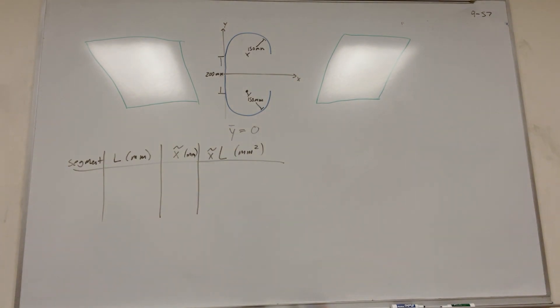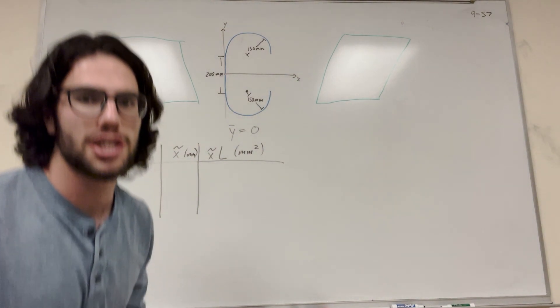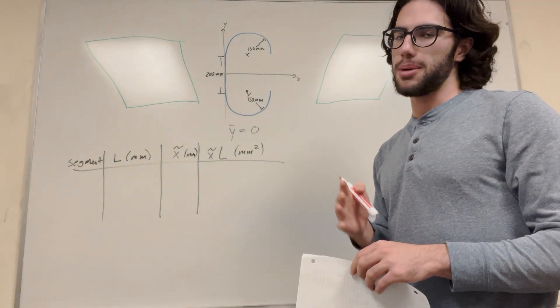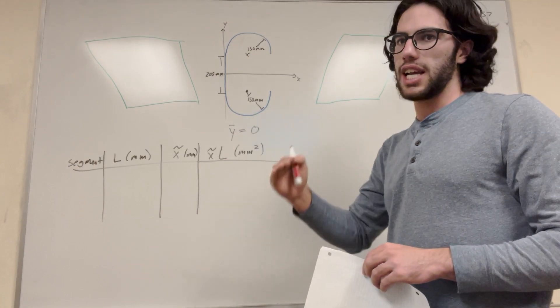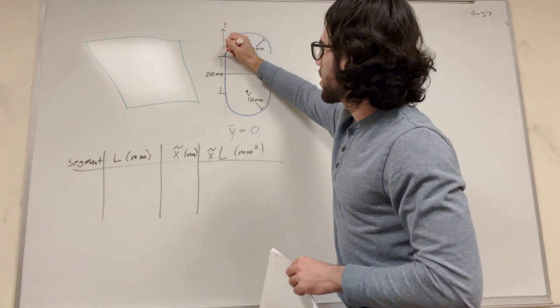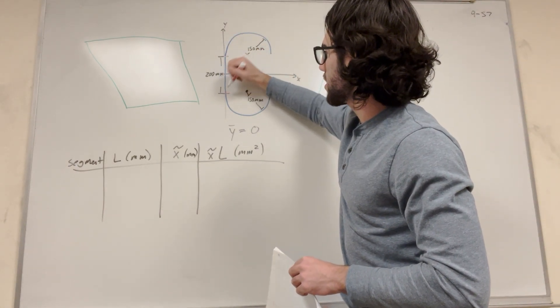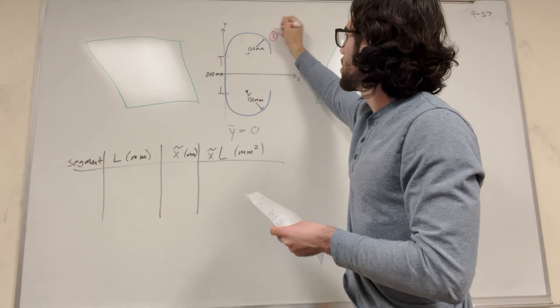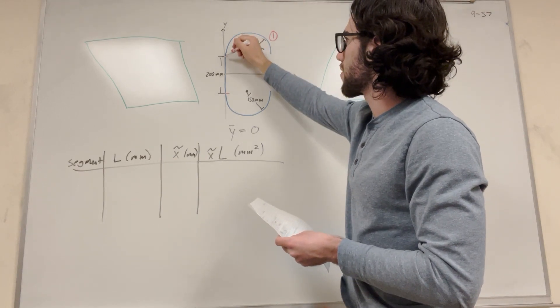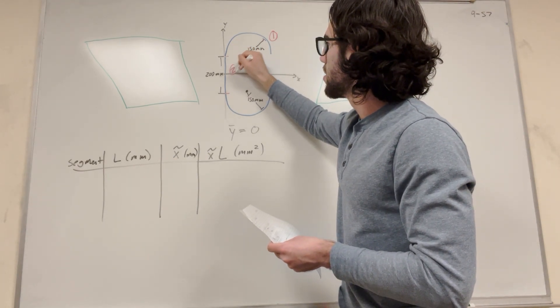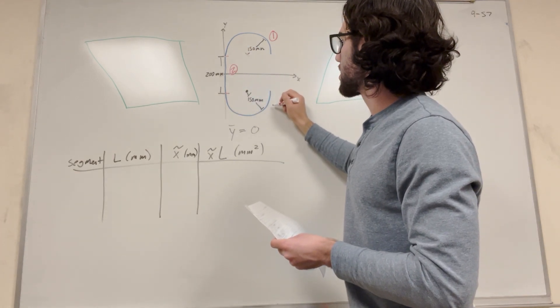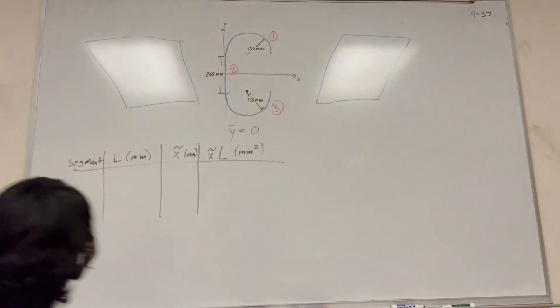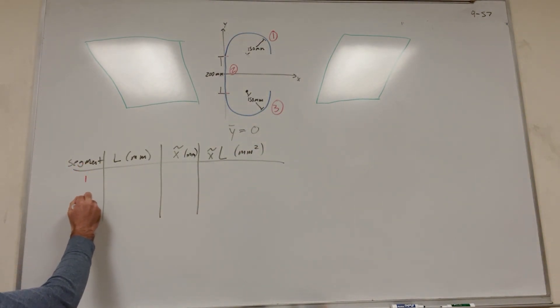Let's start with the segment. We want to find three segments. Let's break this drawing up into three segments. When you're making segments, you want to basically pick choices that is just each one is a distinct function. We're going to label this function. Let's label this section one. Section one is this first curve. Section two is this straight line. And then section three is this last curve. So now we have segment one, two, and three.